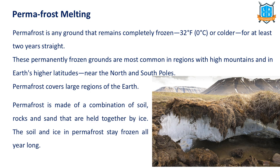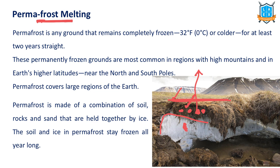Permafrost melting is also an important issue, especially in polar and Arctic Circle regions. Permafrost means the ground is permanently frozen, with organic peat material accumulated on top. Due to increasing temperatures, this ice is melting rapidly, destroying the ecosystem. When this ice melts, it leads to release of methane gas, which again causes global warming. Permafrost melting leads to many kinds of hazards in polar and Arctic regions.